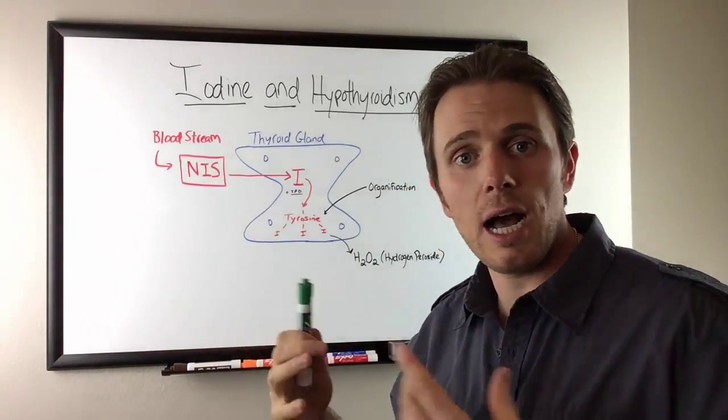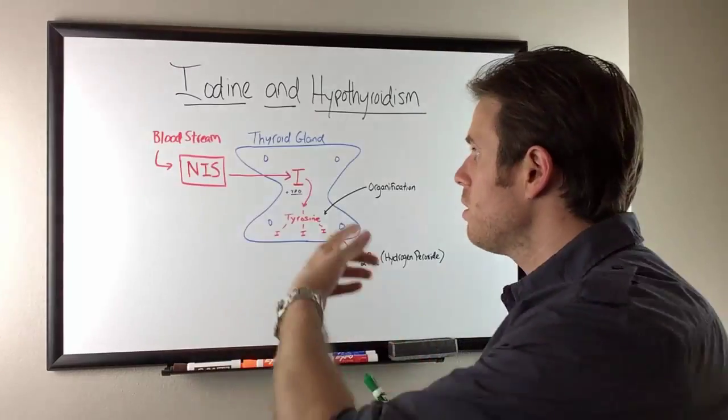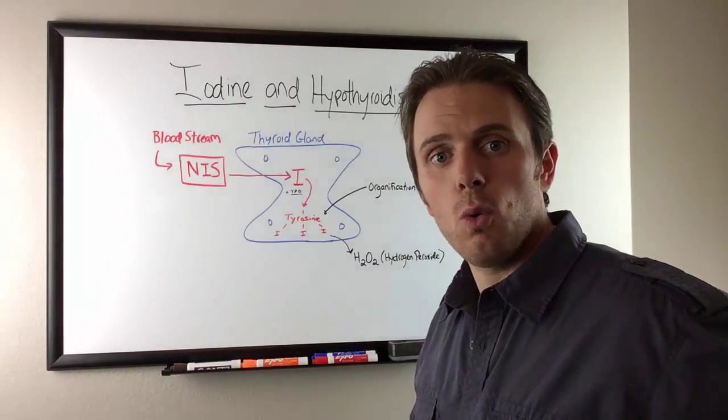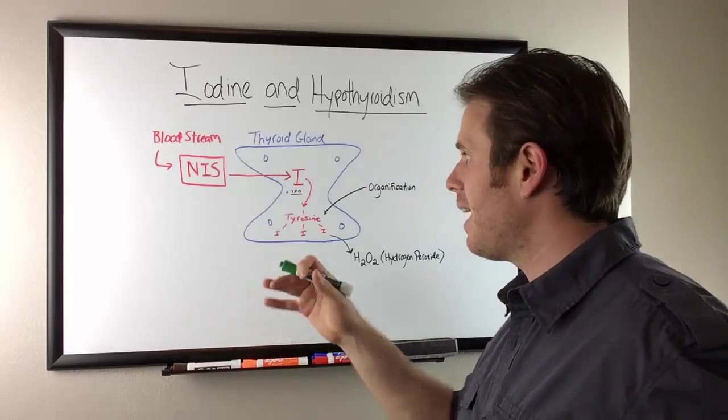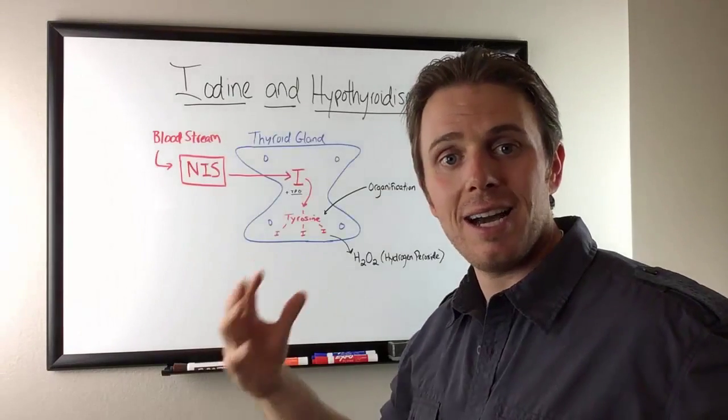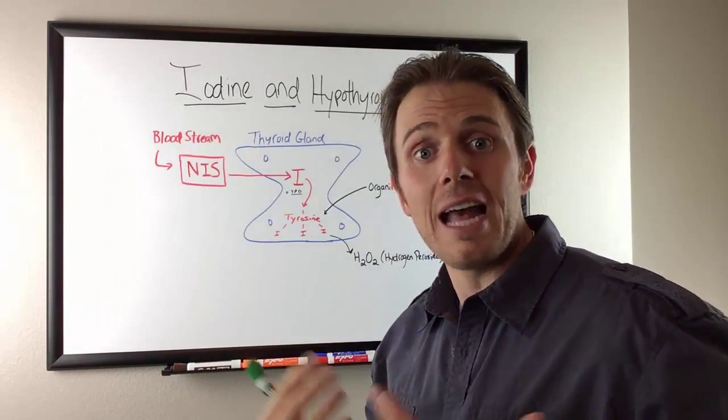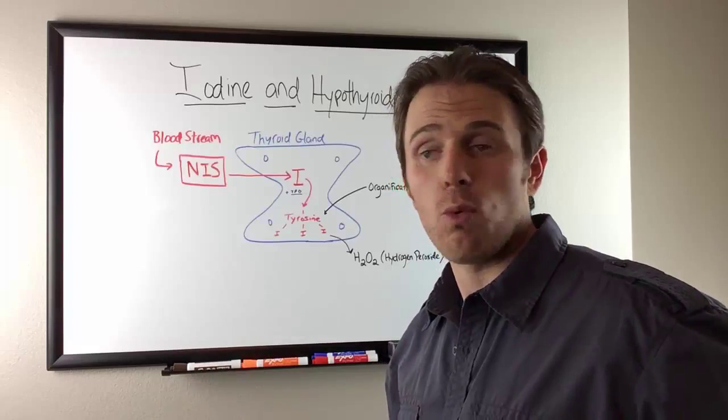Recap: we're taking iodine from the bloodstream into the thyroid gland. We're converting that iodine to iodide, and then we're binding it to tyrosine. So we have four molecules of iodide attached to one molecule of tyrosine. That's T4, or our inactive storage thyroid hormone.